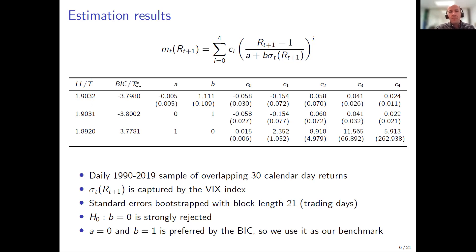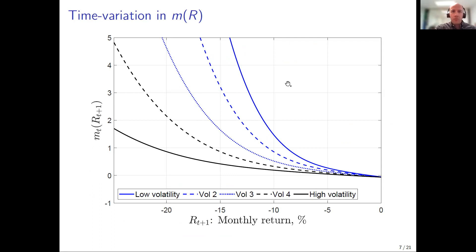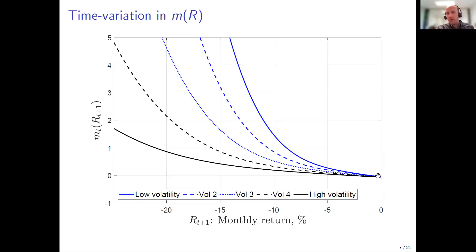Graphically: we have an estimate of the pricing kernel for every day in our sample over the last 30 years — about 7,500 observations. We group them into five buckets based on the VIX (low, medium, high vol) and compute the median in each bucket. The finding holds: when volatility is low, the pricing kernel is steeper. To show time variation, we measure the slope of the line — rise over run between minus 10% and zero — and plot this slope over time.